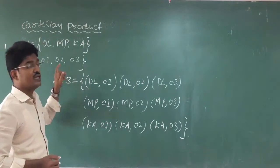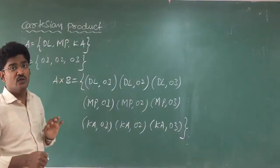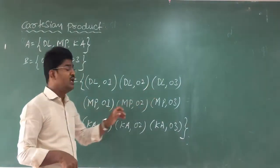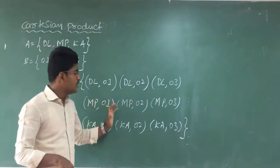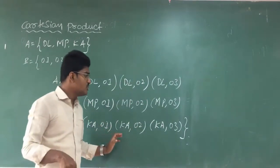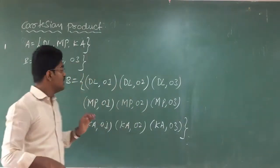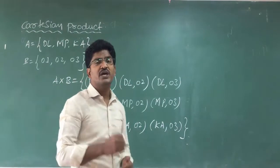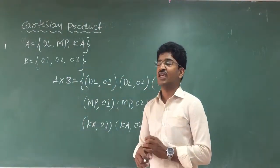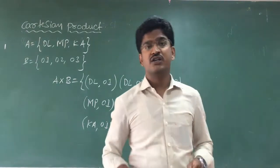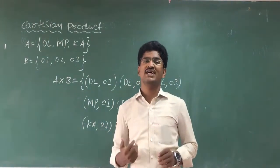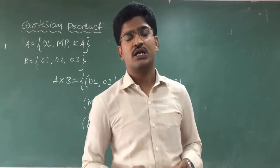That is 3 into 3 — there should be 9 ordered pairs: (dl,1), (dl,2), (dl,3), (mp,1), (mp,2), (mp,3), (ka,1), (ka,2), (ka,3). This is what your Cartesian product is. I think you all have understood what is Cartesian product and how to write the ordered pairs.